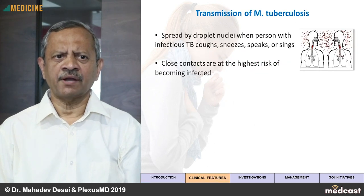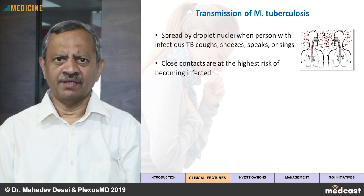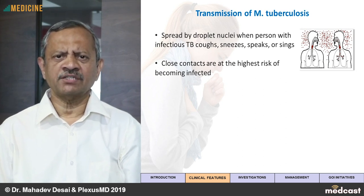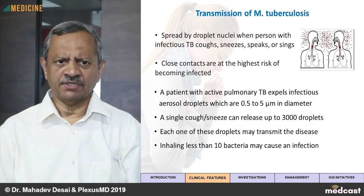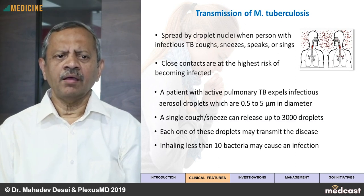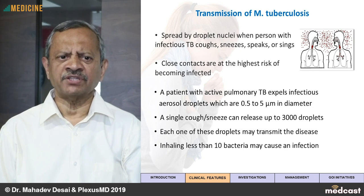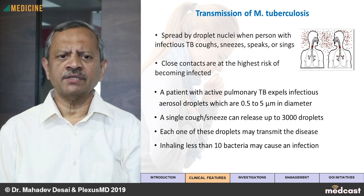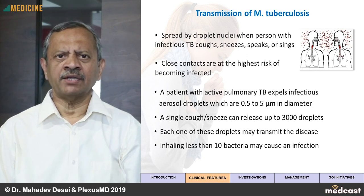Let us see how tuberculosis is transmitted. Whenever a person coughs, sneezes, speaks or sings while having a tuberculosis infection, they spread droplets. These droplets affect the close contacts who are at the highest risk of getting infected. A patient with active pulmonary tuberculosis can expel almost 0.5 to 5 micron diameter droplets, and each single cough or sneeze can release up to 3000 droplets. Inhaling as few as 10 bacteria can also cause an active tuberculosis infection.